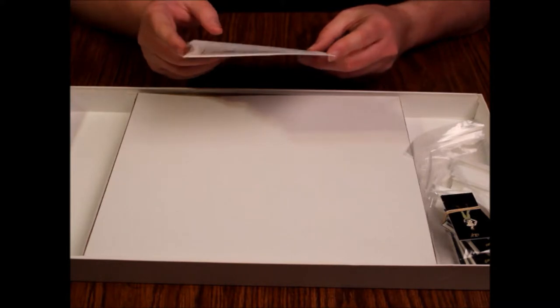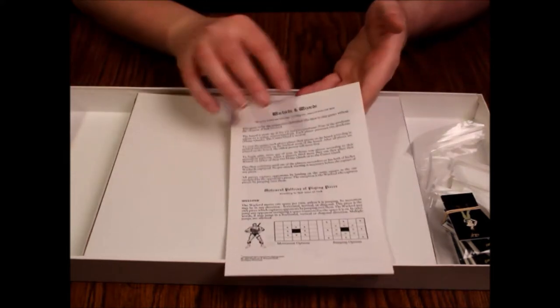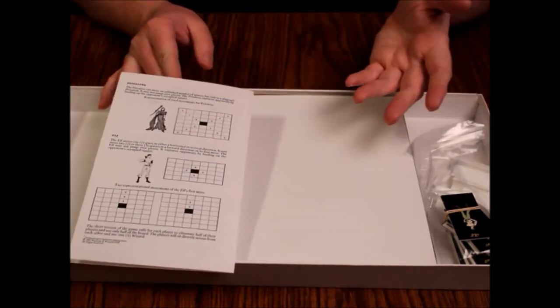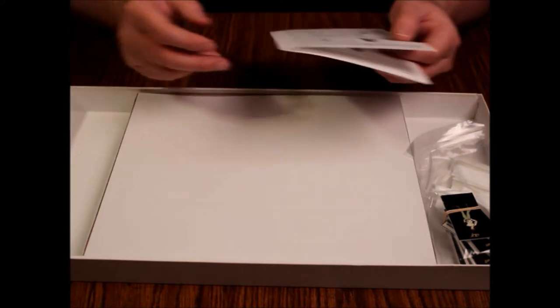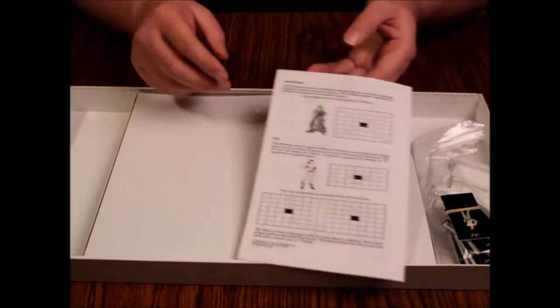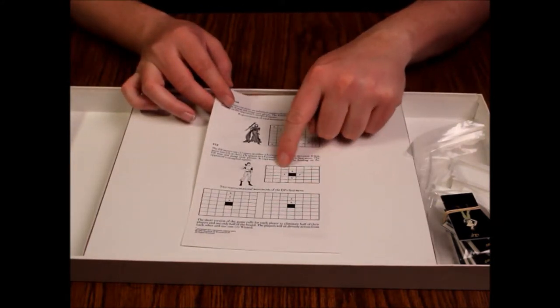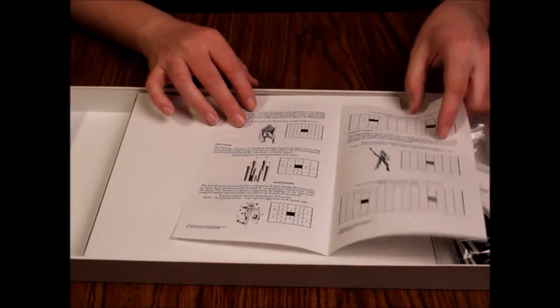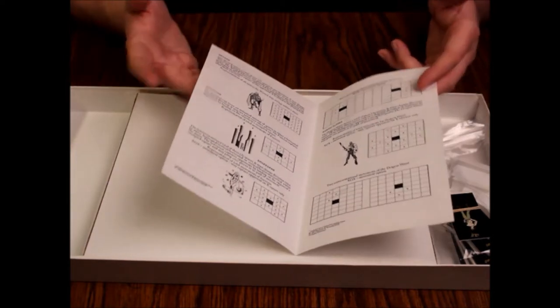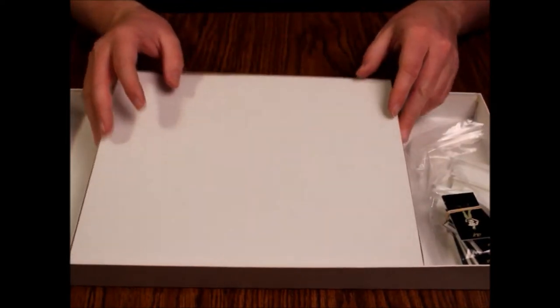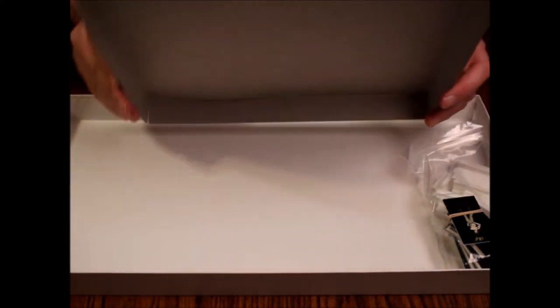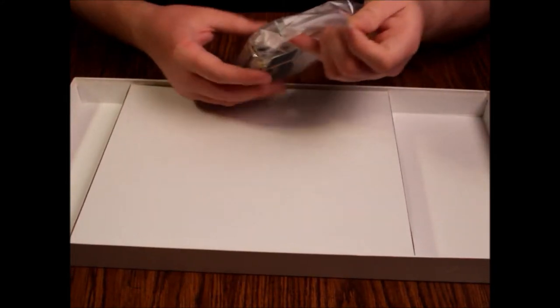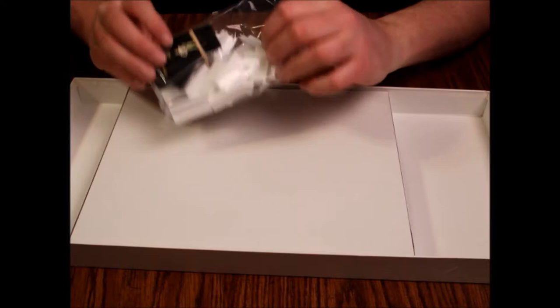All right, so the rule sheet is just a sheet of paper folded in half, doesn't look real complicated. It tells you what directions they can move in or attack in. Like the elf is just one square around him, the wizard is diagonal only, four directions. So it is sort of a chess game, it's effectively a chess game, who am I kidding. All right, anything hiding under here? Nope, the interior of the box has held up pretty well.